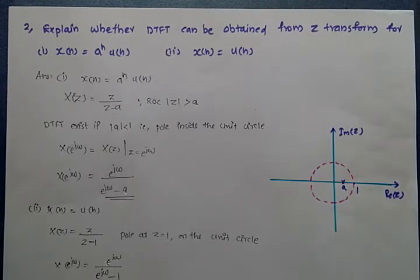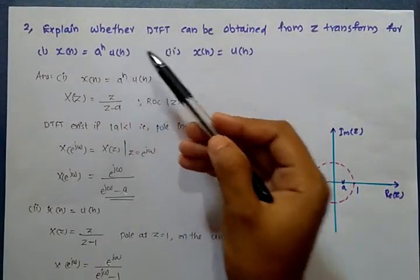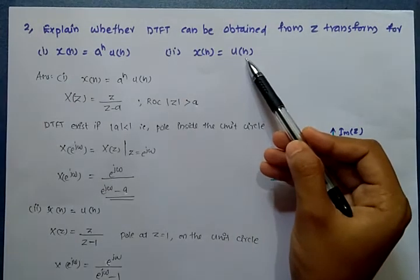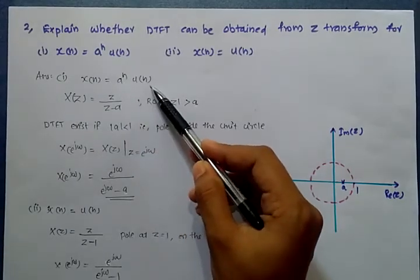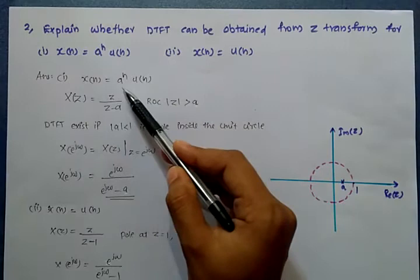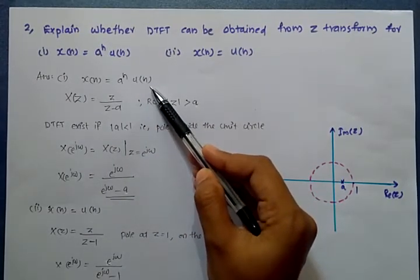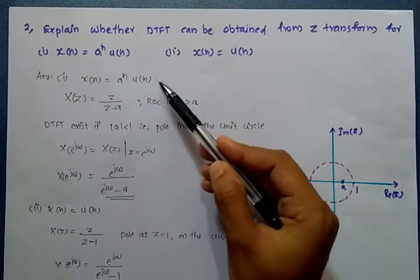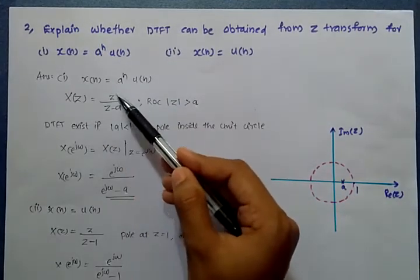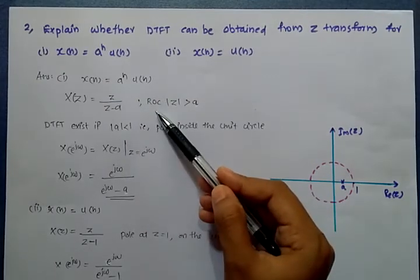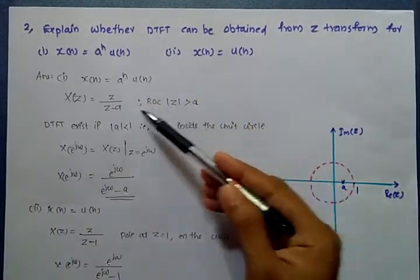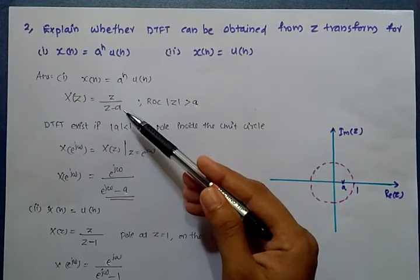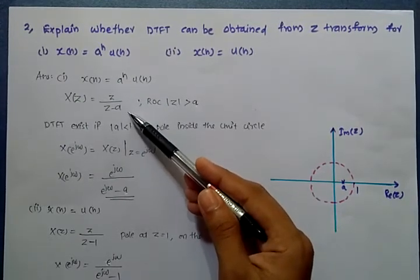The second question asks: can the DTFT be obtained from the Z-transform for (i) x(n) = a^n u(n), and (ii) x(n) = u(n)? For the first case, x(n) = a^n u(n), the Z-transform is X(Z) = Z divided by (Z minus a), with ROC |Z| greater than |a|. The pole is at Z = a. The DTFT exists only when |a| is less than 1, so that the pole lies inside the unit circle.